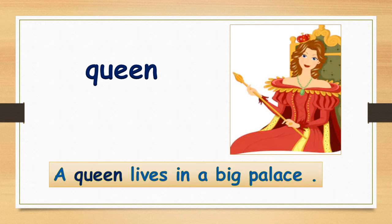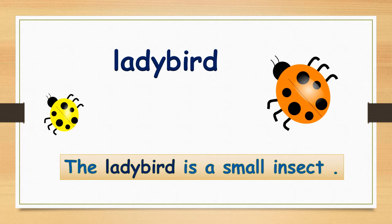Queen — for example: a queen lives in a big house. Next word: ladybird. The ladybird is a small insect.